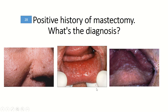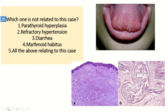Positive history of mastectomy: cobblestone configuration papules in the oral cavity are indicative of Cowden syndrome. Cowden syndrome is associated with several malignancies including breast, endometrial, and follicular thyroid carcinoma. It also has skin findings, typically trichilemmomas. So this is Cowden syndrome.